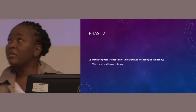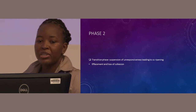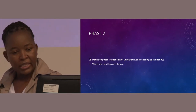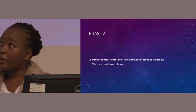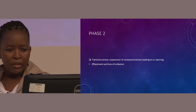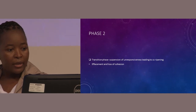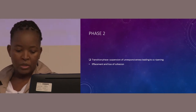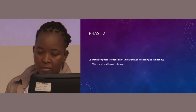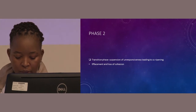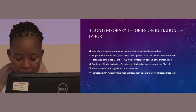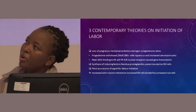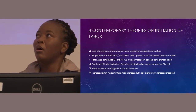After the quiescence phase follows the transitional phase where unresponsiveness is suspended. This leads to cervical ripening and effacement and also loss of cohesion. There is change in the matrix and stroma of the cervix itself.